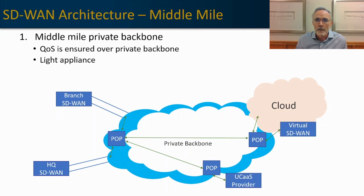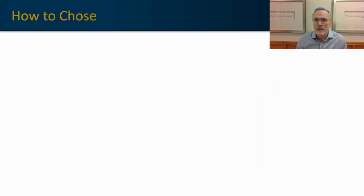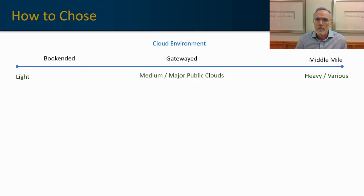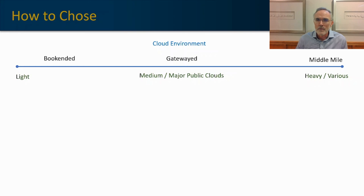With this basic understanding of the three architectures, let's look at how to use that information to inform our decision. Going back to the questions we asked at the beginning: if you have a relatively light cloud strategy, a bookended solution might be more beneficial. If you have a medium cloud strategy or one that relies generally on the major public clouds, Gateway might be a more appropriate solution. If you have a very heavy cloud-first strategy using various providers, a middle-mile solution might be the most beneficial.